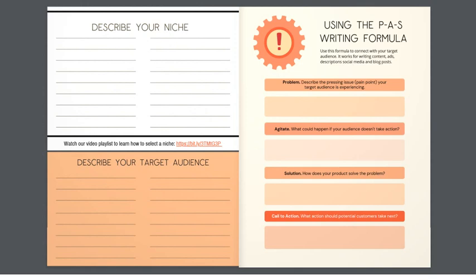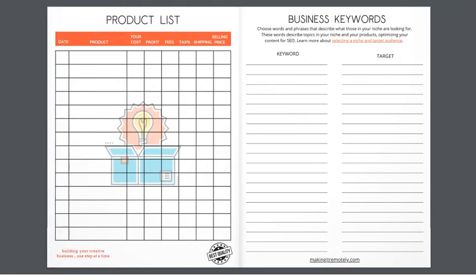You can describe your niche, you can start thinking about your target audience. It even gives you a writing formula that you can use when you're creating content or when you are doing your social media posts. You can use this format to get to the heart of what your ideal customers are looking for.